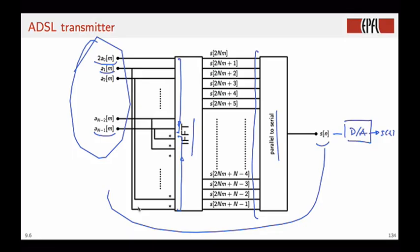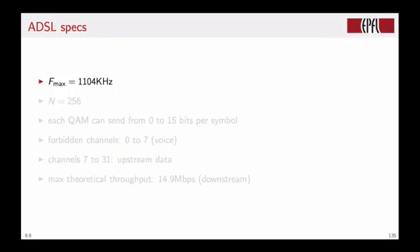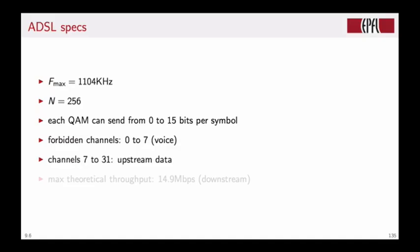An actual ADSL modem uses a maximum frequency for the channel of 1104 kHz, divides this channel into 256 subchannels. Each QAM modem for the subchannel can independently choose between 0 and 15 bits per symbol. Now the first 7 channels are left off because that is the band used by the voice communication over the telephone channel. Channels 7 to 31 are used for data upstream, and the rest is left for data downstream, for a maximum theoretical throughput of 14.9 megabits per second. This would happen if all the downstream subchannels could use their maximum theoretical rate, which is a rare occurrence. And these are the specs of the online modem that you most probably used to watch this online class.